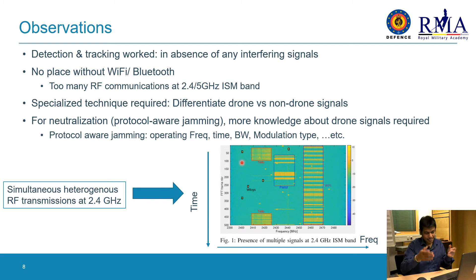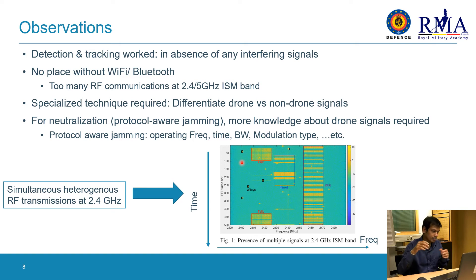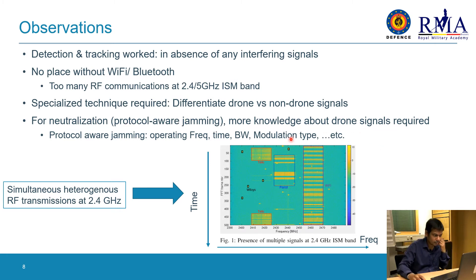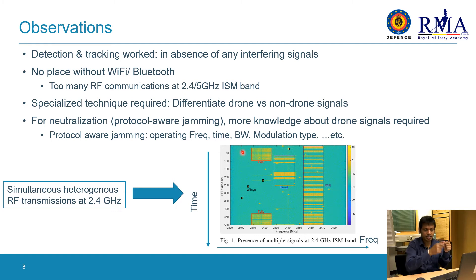If you want to detect precisely which signal belongs to which source, you really need a very specialized detection technique to differentiate between a drone and a non-drone signal, and also to classify what type of drone. Furthermore, if you want to neutralize a drone by RF jamming using protocol-aware jamming, you need more knowledge about the signal itself — the operating frequency, the time instance when communication will occur, the bandwidth, the modulation type, and more.